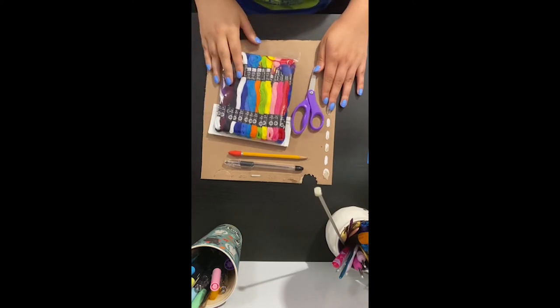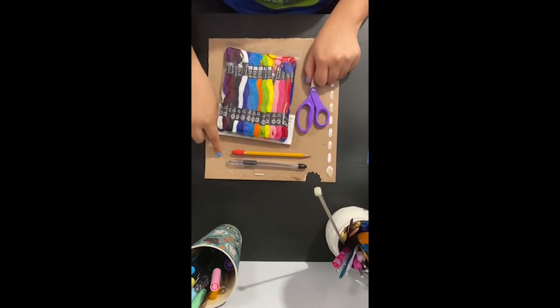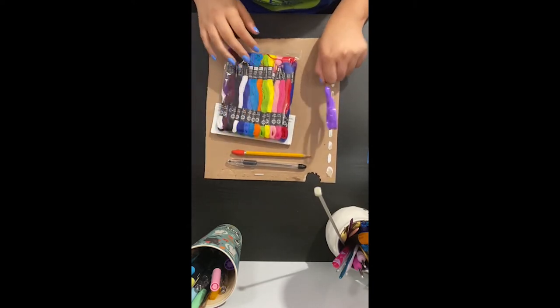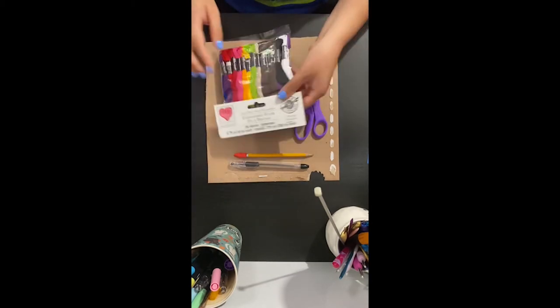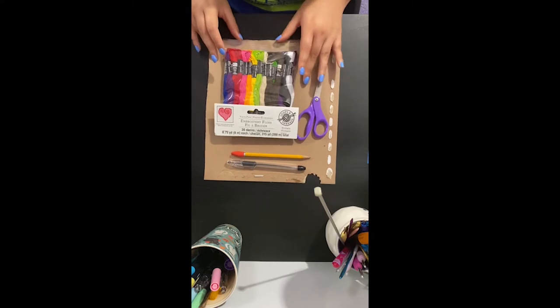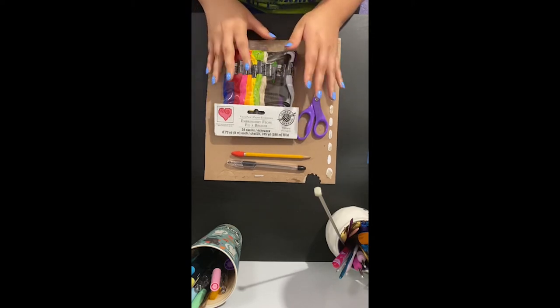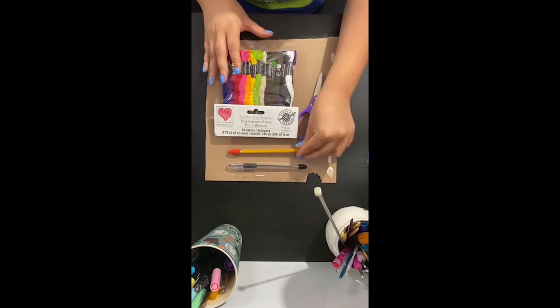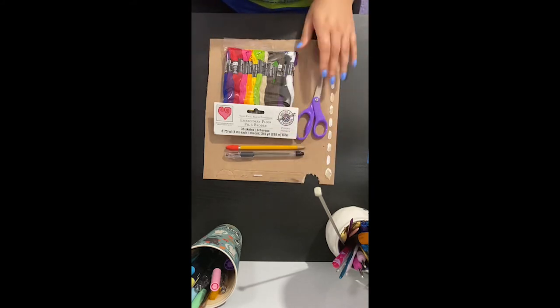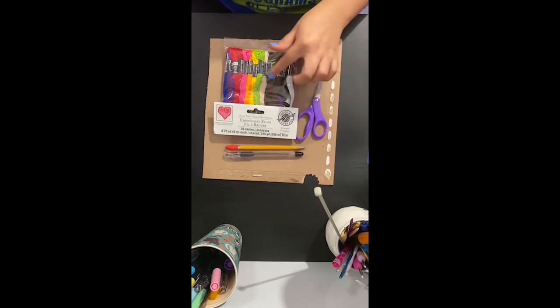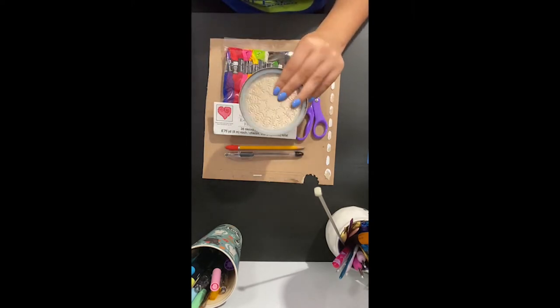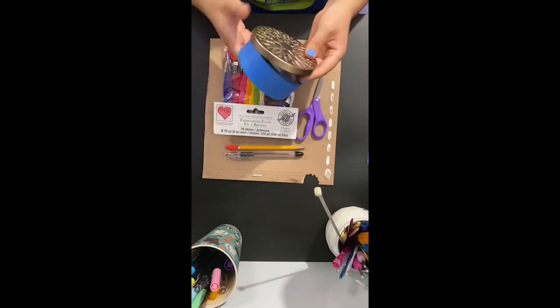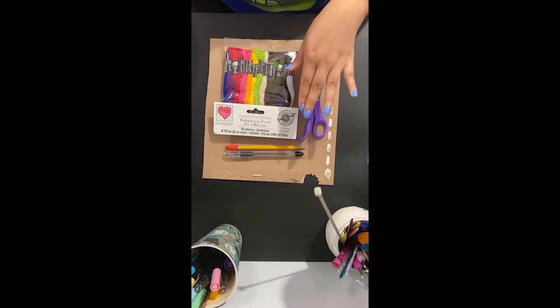To start this project you're going to need a few things. You're going to need some cardboard, a pair of scissors, some embroidery floss. You can buy them in packs or individually or whatever you have at your house works perfectly fine. A pen or a pencil and something to trace a circle. So for here I have some examples. This is the top of a candle, some painter's tape or you can flip a cup upside down and trace that.